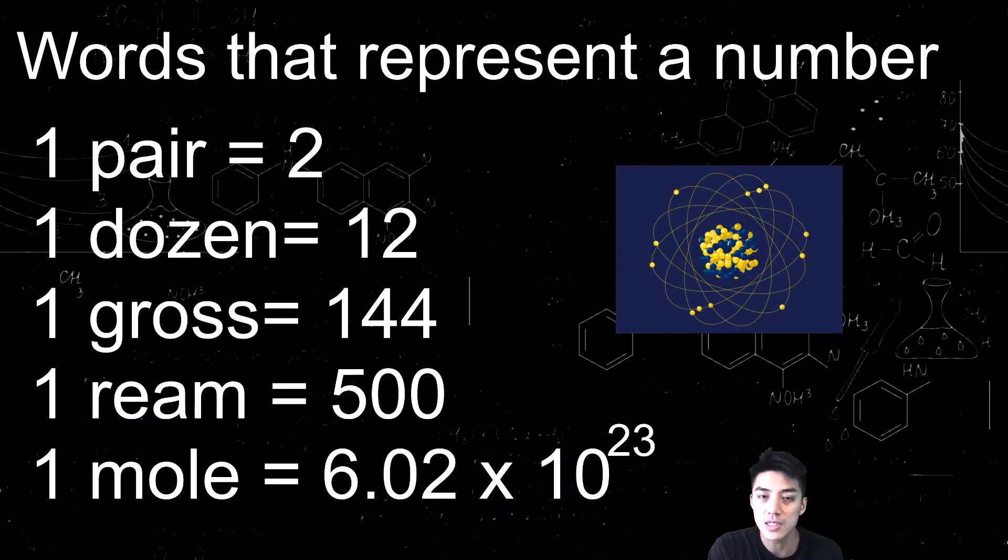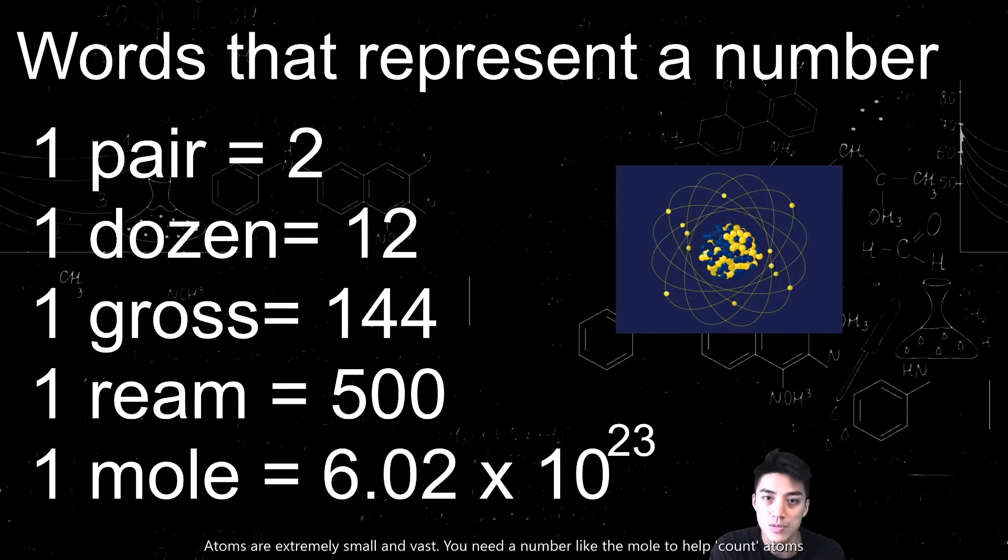A mole is just 6.02 times 10 to the 23rd. It's also known as Avogadro's number. And the reason why this number exists is because atoms are so small, and they're so vast, there's so many atoms out there, that you need a number like the mole to quantify atoms.